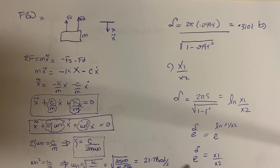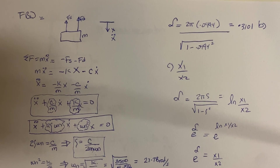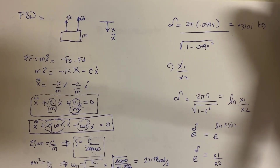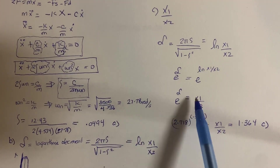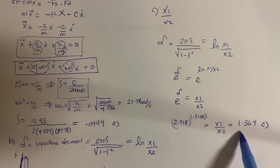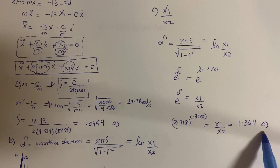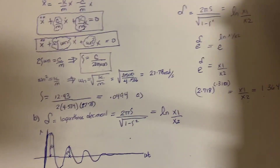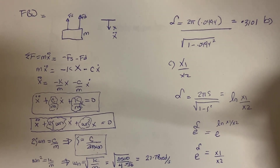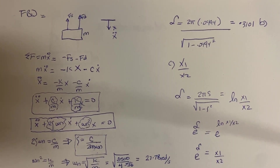So the value of e raised to the logarithmic decrement is x1 over x2, which gives us 1.364. This ratio of 1.364 represents the ratio of successive amplitudes in the graph. For more content on how to solve vibrations and control problems, you can subscribe to the channel. Thank you.